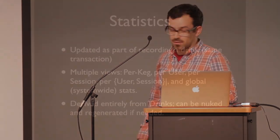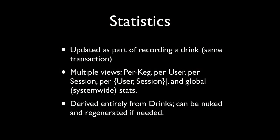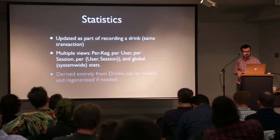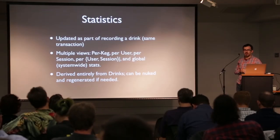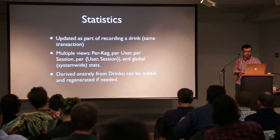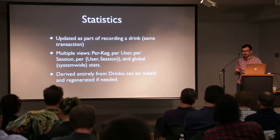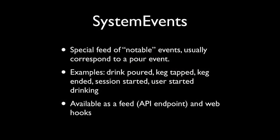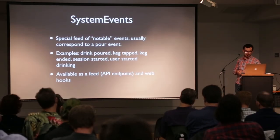All adjacent pours go into a session, which provides a really interesting way to look at the stats — you can see how long sessions typically last, whether it's one drink a night or a five-hour party. Statistics are generated when you pour a drink; you can get them per keg, per user, per session, globally. Statistics are totally derived, so we could blow away the stats table and regenerate it just from the raw drink data. There's also a feed of events driving integrations — it can post to Twitter, Facebook, or you can write your own webhook-based receiver.